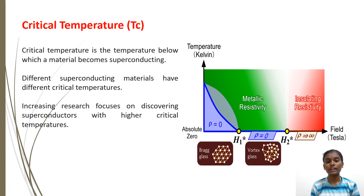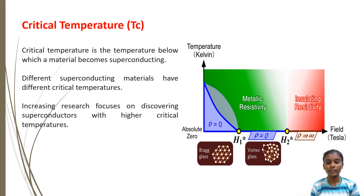Critical temperature is the temperature below which a material becomes superconducting. Different superconducting materials have different critical temperatures. The goal is to find superconductors with higher critical temperatures for practical applications, and increasing research focuses on discovering such superconductors.